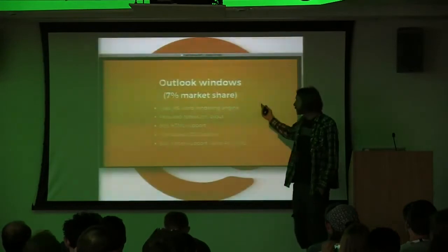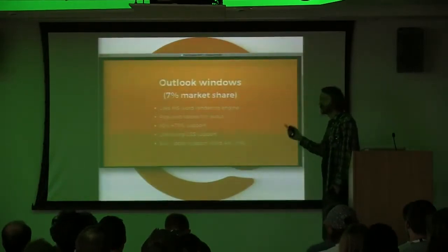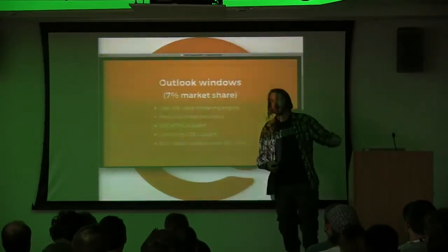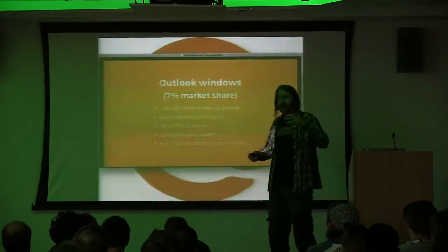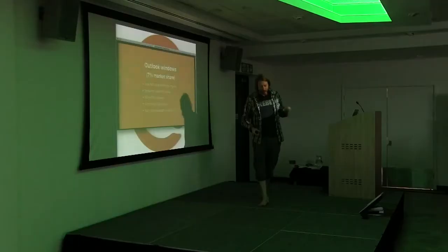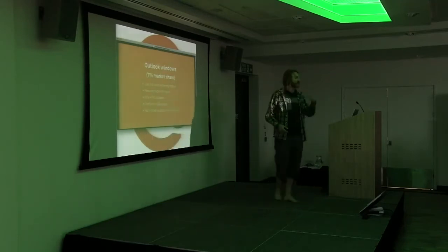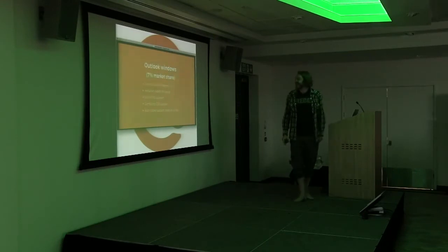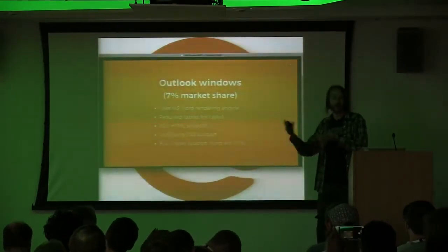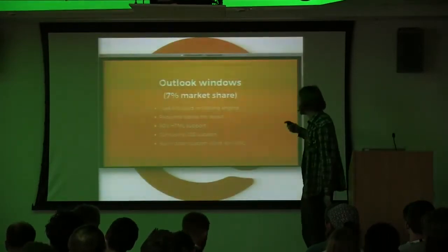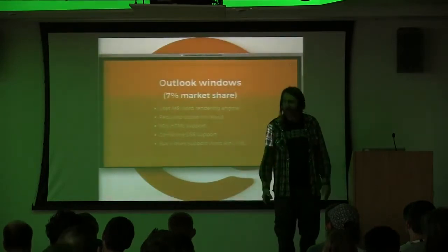If we look at a couple of email clients — first, Outlook on Windows, which is known for being a bit of a pain. Currently 7% market share, looking at Outlook 2007, 2010, 2013, 2016, and Windows Live Mail, which comes with Windows 10 as the default mail client. All of those use Microsoft Word as a rendering engine — they're rendering HTML and CSS with a word processor. They started doing it in 2007 and they're still doing it. It requires tables for layout, so you're using like your 90s HTML support — code like it's 1999 for email. That's because of Outlook.